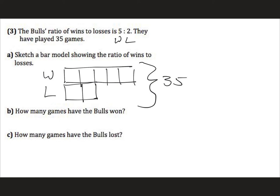In general when we're solving a bar model problem, our job is to find the value of one block. We want to find out what one block equals. So here we have seven blocks: one, two, three, four, five, six, seven totaling 35. So we can take 35 and divide it by seven, which is five. So that means every block is worth five games.